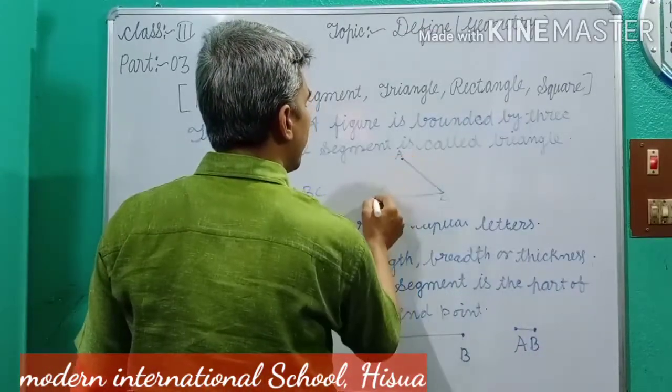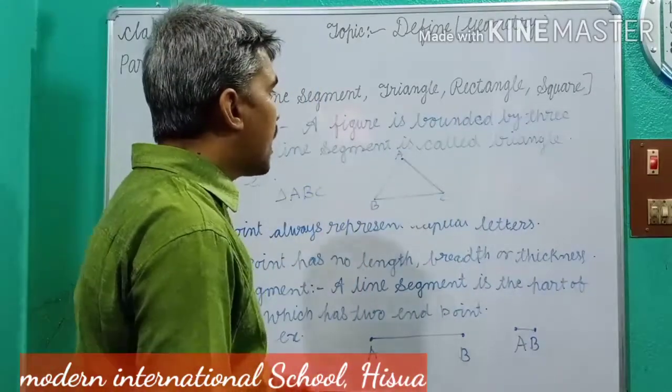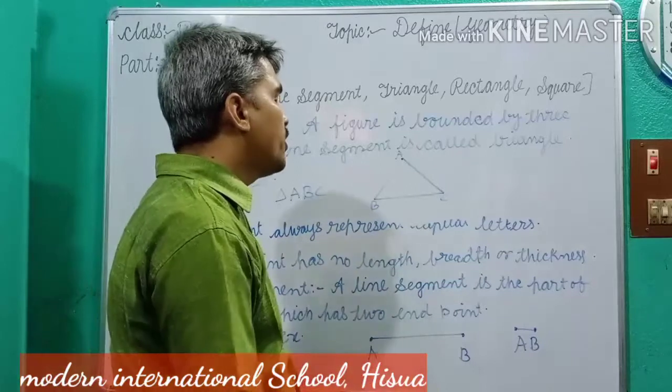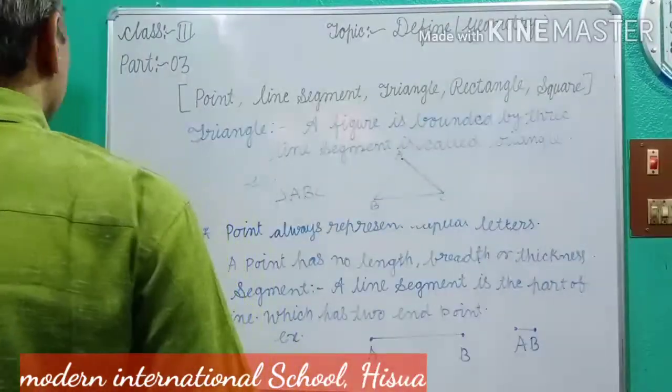Dear students, here triangle ABC. You know that? How many vertices? Three vertices. How many sides? Three sides. How many angles? Three angles.